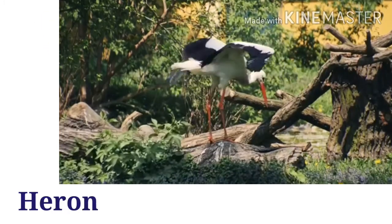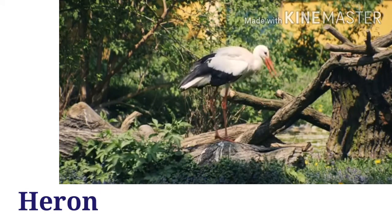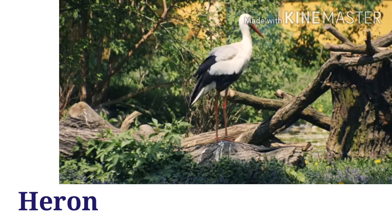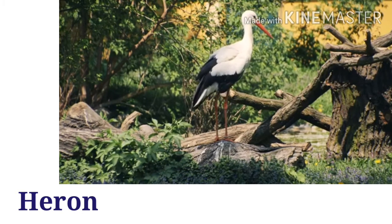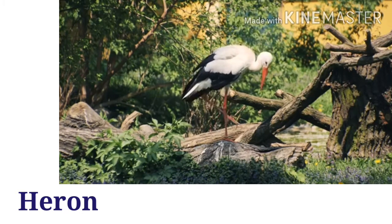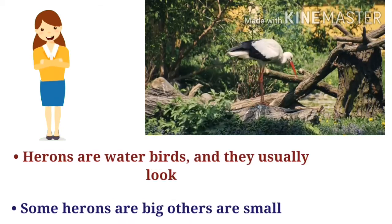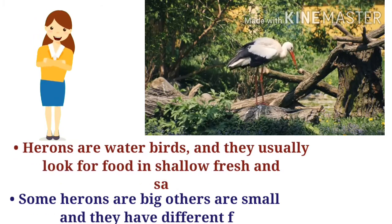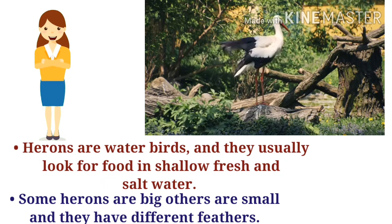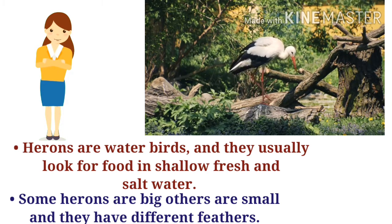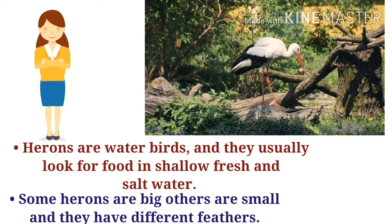Who is this? This is a heron. H-E-R-O-N. Let's introduce herons. Herons are water birds that usually look for food in shallow fresh and salt water. Some herons are big, others are small, and they have different feathers.